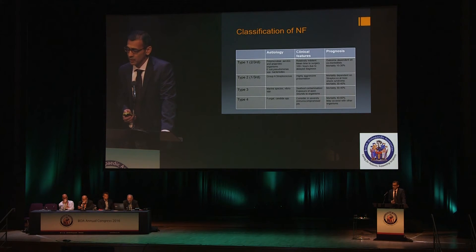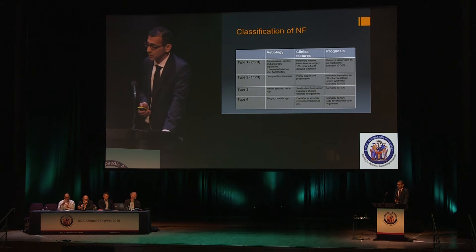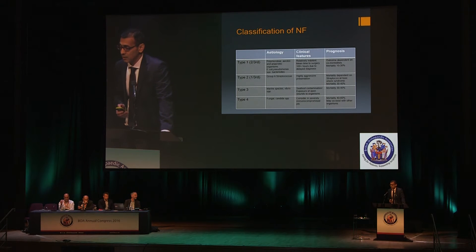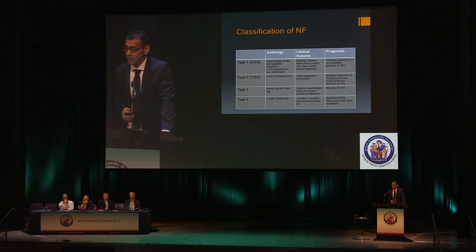Moving to the classification: Type 1, luckily the commoner one, is polymicrobial. It's good because we have a little bit of lead time — these are more indolent infections. It's bad because the diagnosis is often delayed; it appears like cellulitis and patients are referred quite late. Still, in more recent series the mortality rates are closer to around 10%.